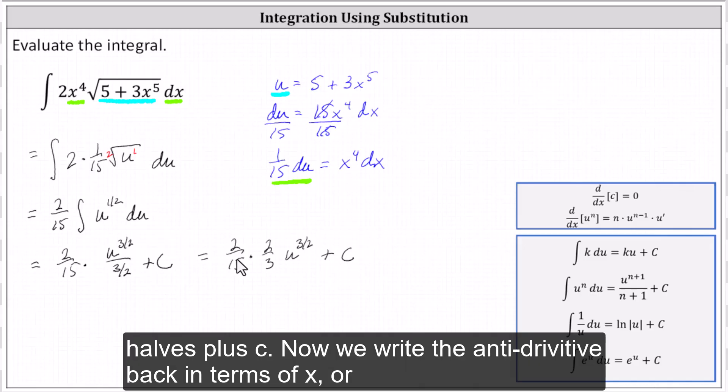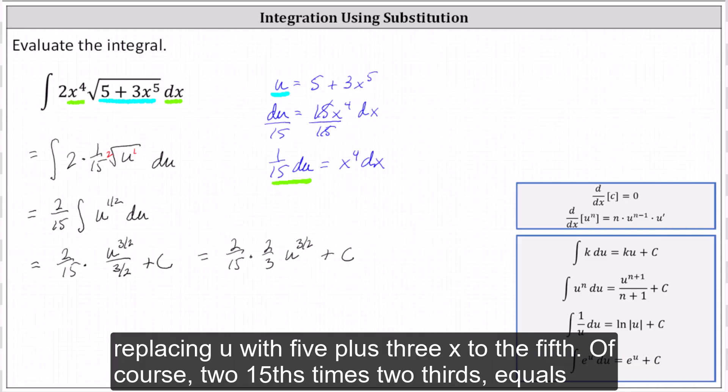Now we write the antiderivative back in terms of x by replacing u with 5 + 3x^5.